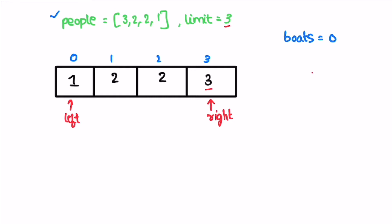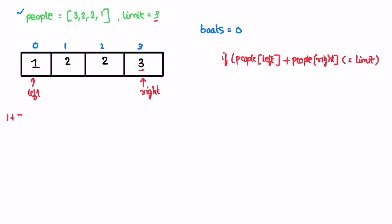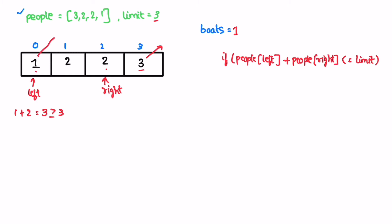First check: left plus right is one plus three equals four, which is greater than three, so we can't send both people. We only send the right person (weight three), increment boats, and decrement right. Now right points to the next element. Second check: one plus two equals three, which is greater than or equal to three, so we send both persons in one boat. We increment boats, increment left, and decrement right.